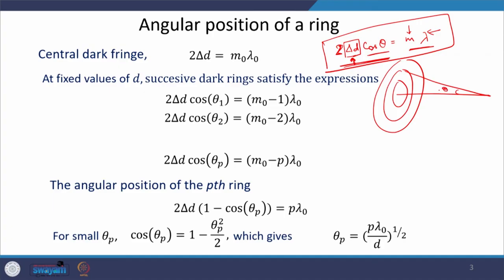Since δd is getting reduced, θ should also decrease so as to keep the left-hand side of this equation constant. If we reduce θ — which is the angular position of the fringes — then the fringes will move towards the centre.